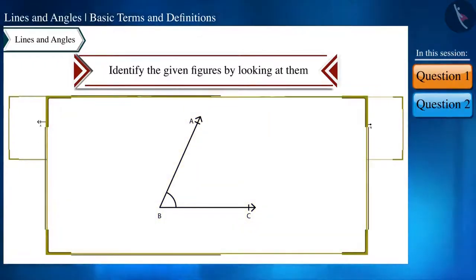In this figure, an angle is given, angle ABC, and by looking at it, we can easily say that its measure is less than 90 degrees. Therefore, angle ABC is an acute angle.